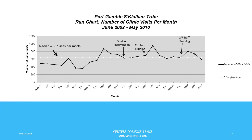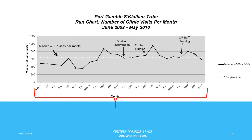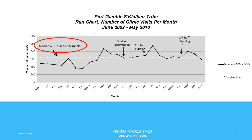Finally, we have a real example from Washington, used by permission from Dr. Bill Riley, who worked with the Port Gamble S'Klallam Tribe. In this example, clinic staff are working to increase visits to the clinic, and this run chart tracks their progress. Number of visits is reflected on the y-axis, monitored monthly over time. The median is 637 visits per month. After an intervention to increase clinic visits starting in June, there is a bump in data after each staff training, and average visits start surpassing the median of 637.